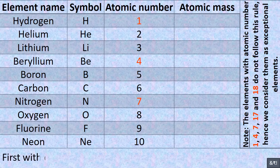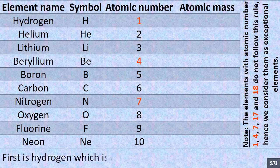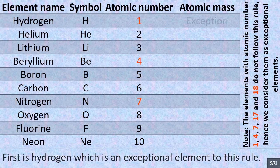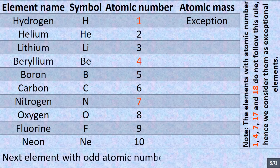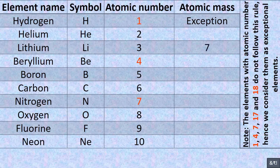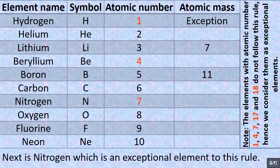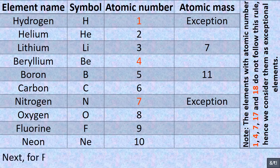We can start with the first 10 elements, beginning with elements having odd atomic number. Hydrogen is an exceptional element to this rule. Next, for lithium: 2 multiplied by 3 plus 1 equals 7. For boron: 2 multiplied by 5 plus 1 equals 11. Nitrogen is an exceptional element to this rule. For fluorine: 2 multiplied by 9 plus 1 equals 19.